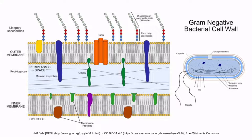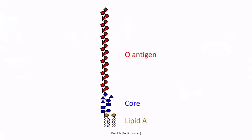This is an image of the bacterial cell wall of gram-negative organisms. You can see lipopolysaccharides embedded in the outer membrane. Lipopolysaccharides are composed of three regions: an O antigen, a core, and lipid A. Of all of these regions, lipid A is the most important to be familiar with, because it's responsible for activating the immune response and is ultimately what causes septic shock. So remember: lipid A.